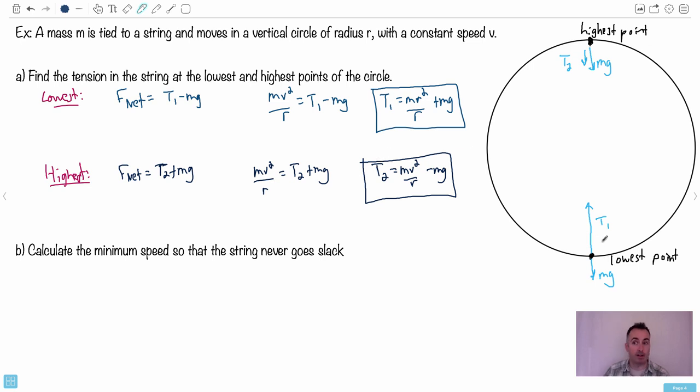This is going to be my final tension for T2. Now we've got the tension at point one and the tension at point two. Let's see what we can do with this. We want to calculate the minimum speed so that the string never goes slack. That may not sound so obvious. What's going on is that it all depends on the speed at which you rotate this thing.